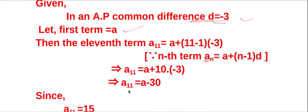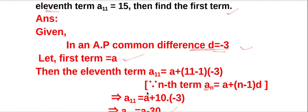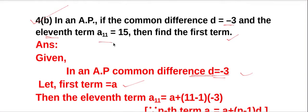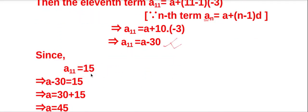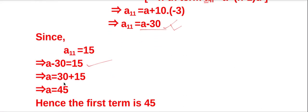Simplifying: a₁₁ equals a plus 10 into minus 3, which equals a minus 30. Since the given value of a₁₁ is 15, we substitute: a minus 30 equals 15, so a equals 30 plus 15, giving a equals 45.